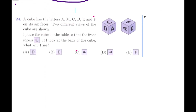This is a very interesting question requiring a lot of visualization. If your visualization isn't strong, I'd suggest actually taking a cube - an eraser or anything - and writing the letters on it to work it out. A cube has the letters A, M, C, D, E, F on its six faces. Two different views of the cube are shown. I place the cube on the table so the front shows C. If I look at the back of the cube, what will I see?